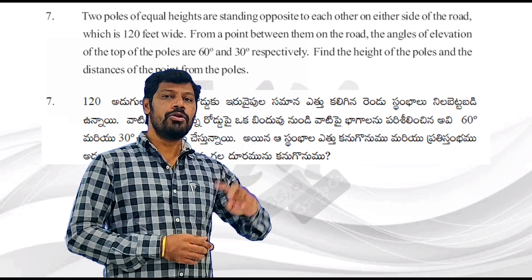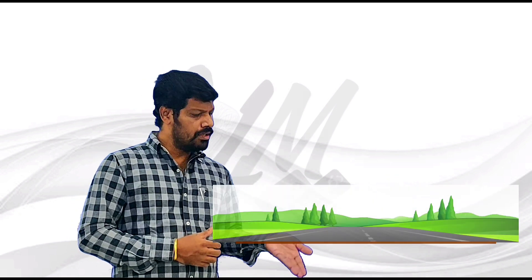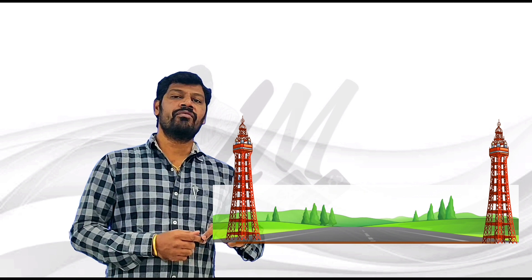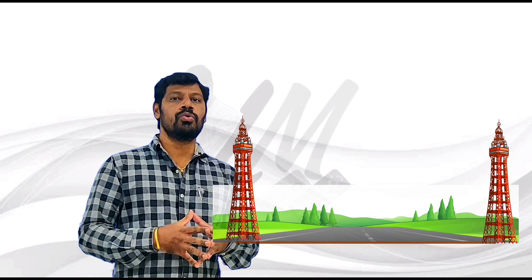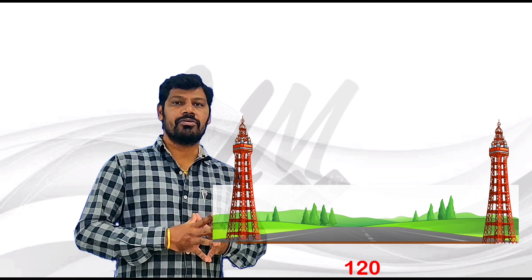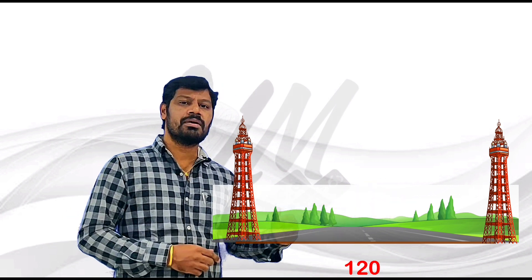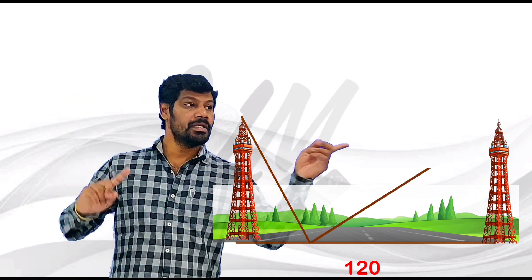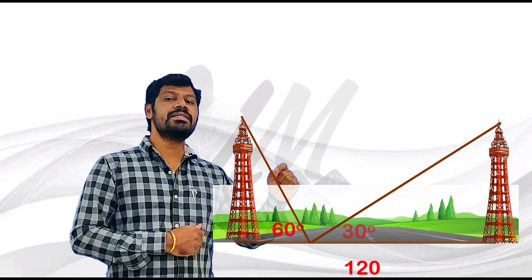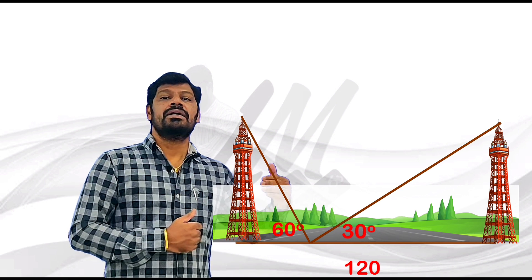Just to have a look — there are two equal heights of poles. Somewhere between the poles, the first distance is given.